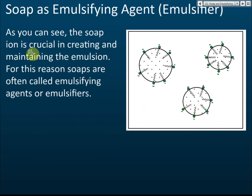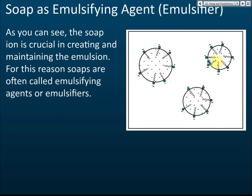The soap ion is crucial in creating and maintaining the emulsion. Without soap ions, the oil droplets join together to form the oil layer again. With the help of soap ions, we prevent the oil molecules from joining to form the oil layer. For this reason, soap is often called an emulsifying agent or emulsifier. This is very important in cleaning — if the oil is dirt on cloth, when you rinse with water the grease or oil will be removed from the cloth.